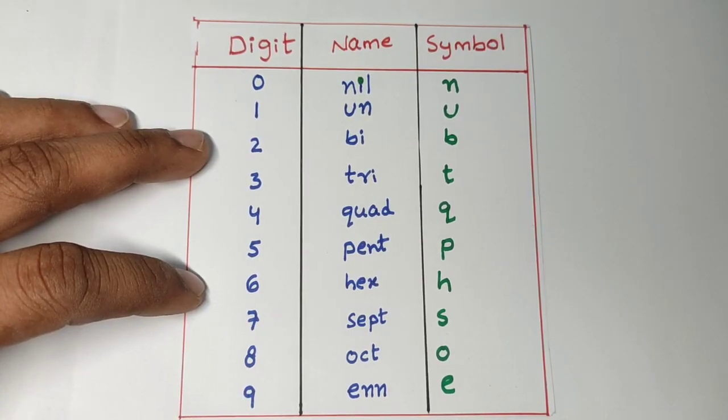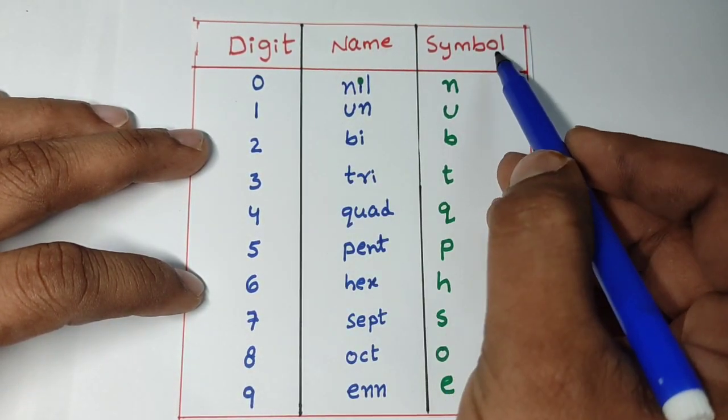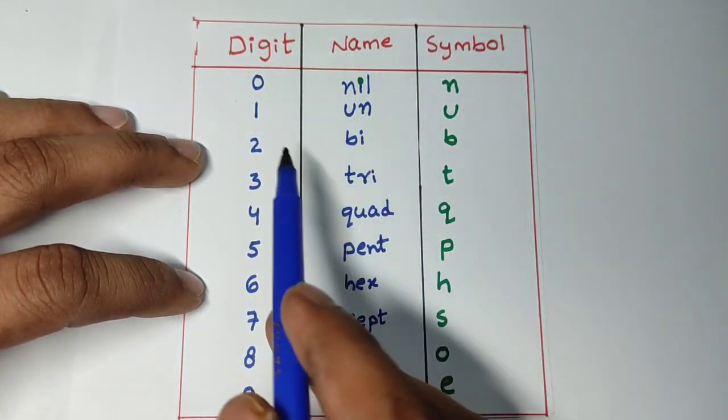To solve these questions we have to remember the name and symbol for every digit. Look at this.